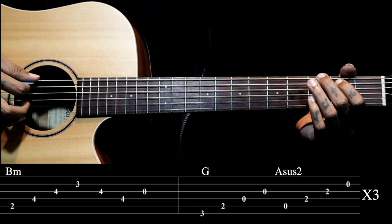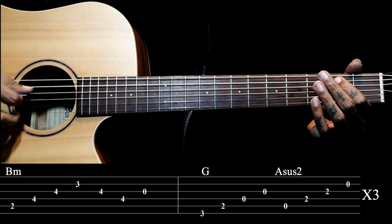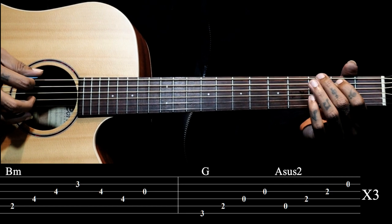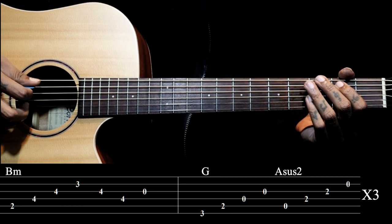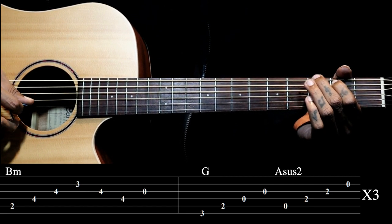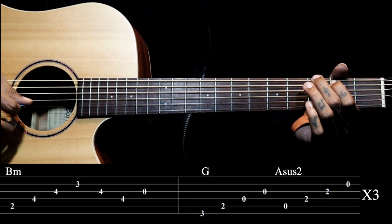Then we go to G chord. With G chord we are holding 6th string 3rd fret and 5th string 2nd fret. When we are plucking: 6, 5, 4, 3, 4, 3, 4.